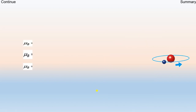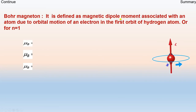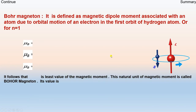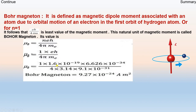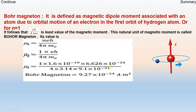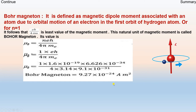The Bohr magneton is defined as the magnetic dipole moment associated with an atom due to orbital motion of the electron in the first orbit of the hydrogen atom. It has the value μB = EH/4πMₑ for N=1, with e = 1.6×10⁻¹⁹, h = 6.6×10⁻³⁴, Mₑ = 9.1×10⁻³¹, giving μB = 9.27×10⁻²⁴ A·m².